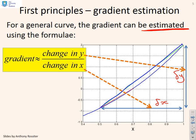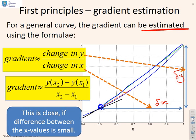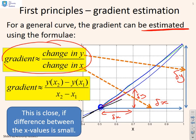Now, clearly that does not match the gradient of the curve at this point. We've approximated the gradient using this formula and we can see it's close to the real gradient, and if we make delta x smaller we get closer. So if delta x is small then this approximation is close to the gradient, but it's not exact.